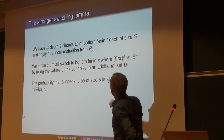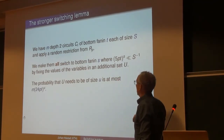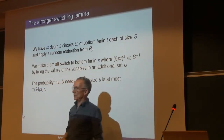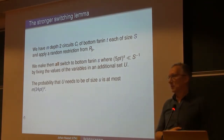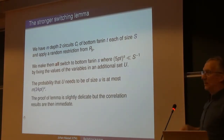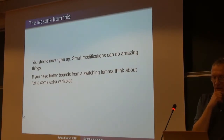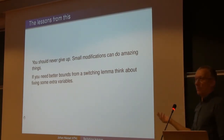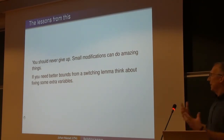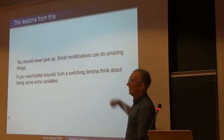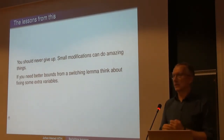Formally, if you have lots of small depth circuits and apply the restriction, you can make a whole switch with essentially the usual probability, by giving values to some additional variable set U. The failure probability is of the same kind — you get 24 instead of 5, but that doesn't matter since we're not focused on constants. Once you have this lemma the rest of the proof just works. You should never give up — 20 years later you change one thing and it actually works.